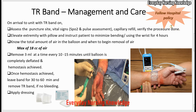Elevate the extremity with a pillow and instruct the patient to minimize use of the punctured arm for at least four hours — minimize bending and using the wrist. You should know the total amount of air used to inflate the balloon. The maximum amount is 18cc. Know when to begin removal of air: for a diagnostic procedure, start deflating 45 minutes after sheath removal; if an intervention was done, start deflating two hours post sheath removal.